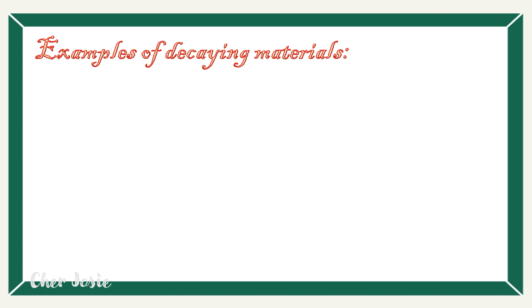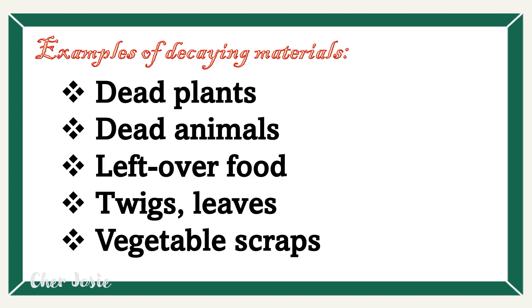Here are the examples of decaying materials: dead plants, dead animals, leftover food, twigs, leaves, and vegetable scraps.